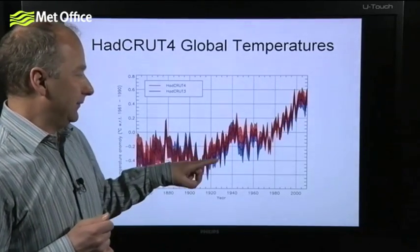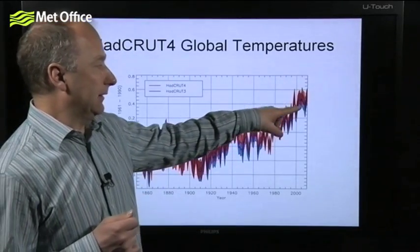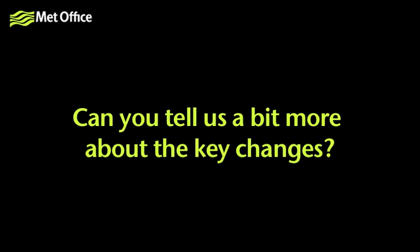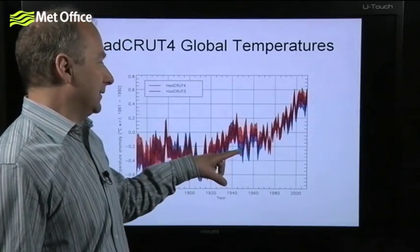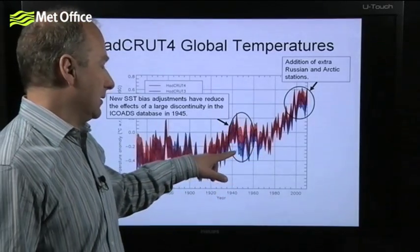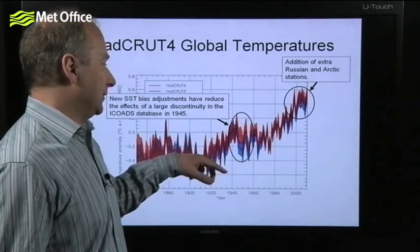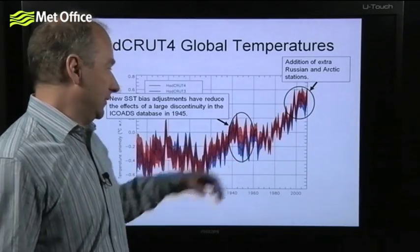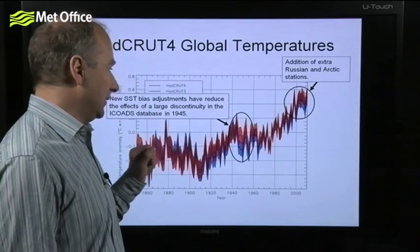The main differences between the two records occur in two places: in the middle part of the 20th century, and in more recent years. In the middle part of the century, HadCRUT4 in red is generally a bit warmer than HadCRUT3. This is because of our new analysis of the different ways in which sea surface temperatures have been measured over time.